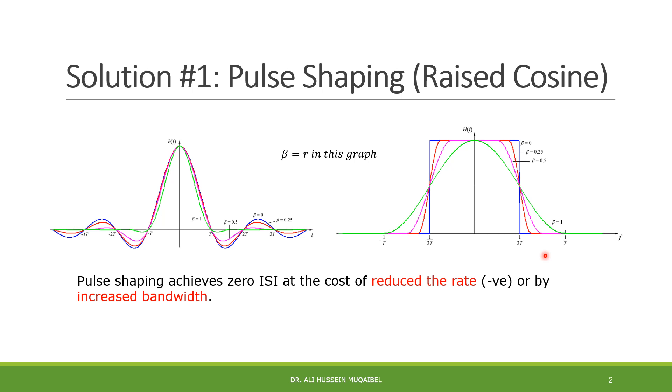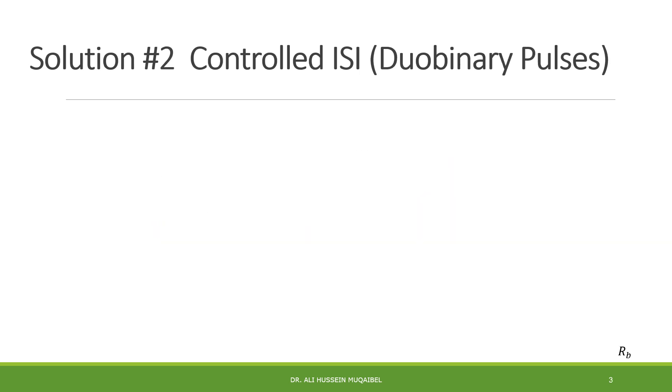Now the question we pose, can we solve the problem of ISI without losing bandwidth, without the excess bandwidth? And the answer is yes. How? Using controlled ISI. In controlled ISI, or partial response signaling, we can use different pulse shapes. We'll start with the duobinary pulse.